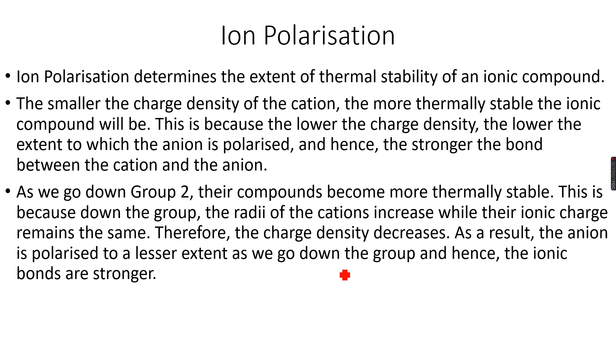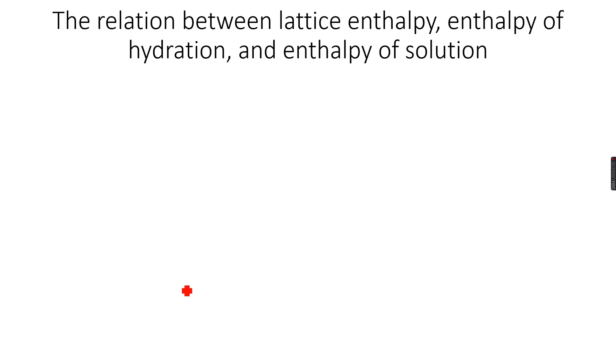As a result, the anion is polarized to a lesser extent as we go down the group, and hence the ionic bonds are stronger. Since the ionic bonds are stronger as we go down the group, the compounds of Group 2 are more thermally stable. If you write this answer as it is, you will get three or four marks because this question always comes for three or four marks.